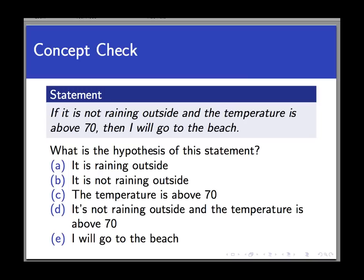So the question is, what's the hypothesis of this statement? Is it: it's raining outside? It's not raining outside? The temperature is above 70? It's not raining outside and the temperature is above 70? Go ahead and pause the video and think of which response is most correct, and unpause when you're ready to go ahead.